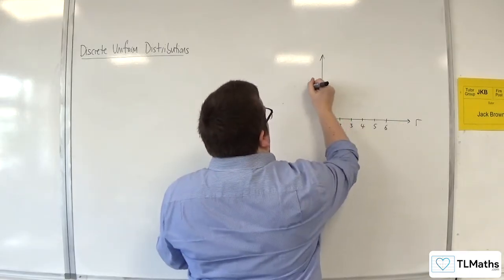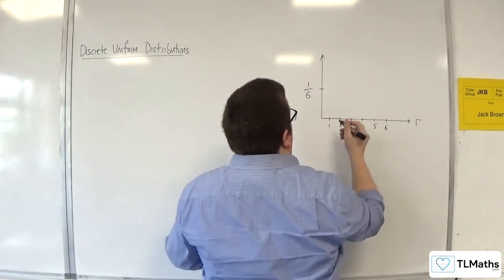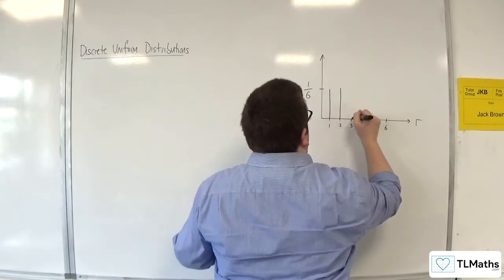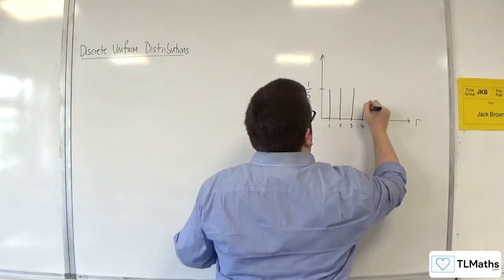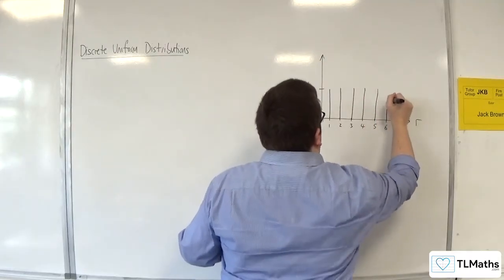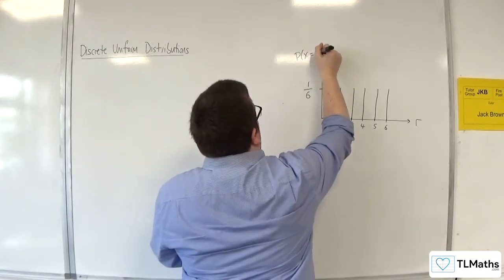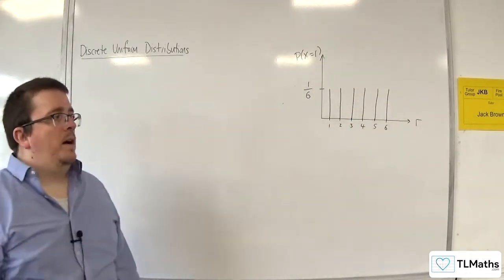And the probability of the event occurring is 1 over 6. Then the distribution would look like this. So not a particularly interesting looking graph, but that would be our distribution.